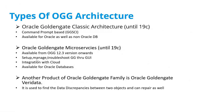Oracle GoldenGate has two different types of architectures: classic architecture and microservices architecture. GoldenGate was founded in 1995, named after the famous San Francisco Golden Gate Bridge. In 2009, Oracle acquired it, and since then it has been known as Oracle GoldenGate. Oracle made major changes post-acquisition, and the growth trajectory has been consistently upward.